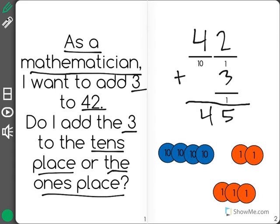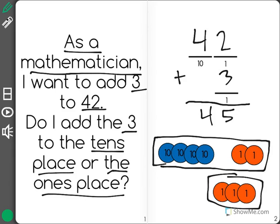Another possible way to look at this is to get the number 42 represented in manipulative counters. As you can see, when we add 3, we are adding 3 ones, not 3 tens.